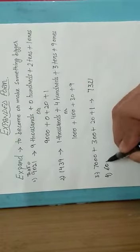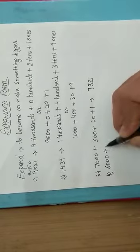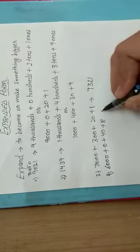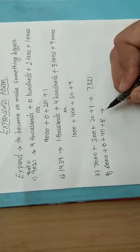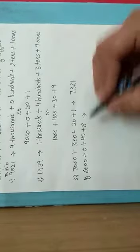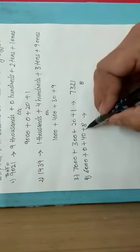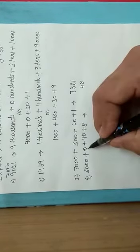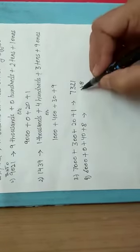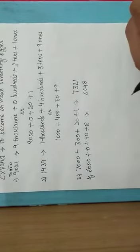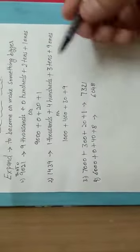If there is 0 at any place, how can we write the number? Starting from the ones place: 8 is at ones, 4 is at tens, 0 is at hundreds, and 6 is at thousands. So the number is 6048. In this way we can write the expanded form and also write the number from the expanded form.